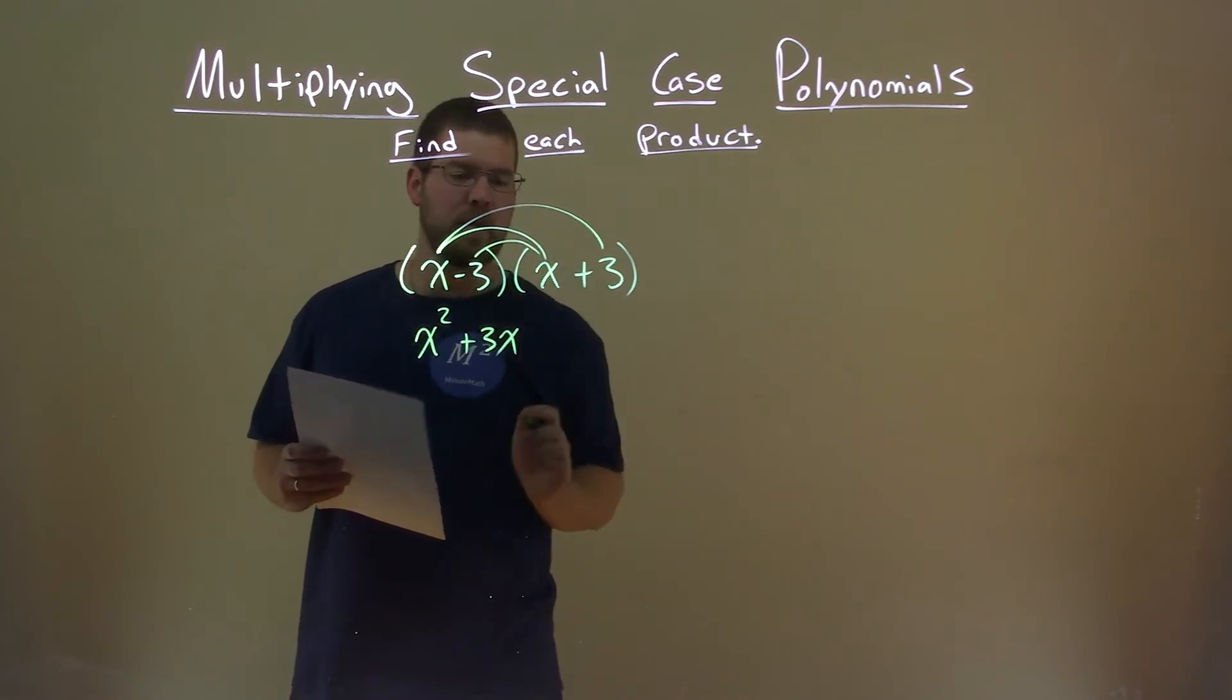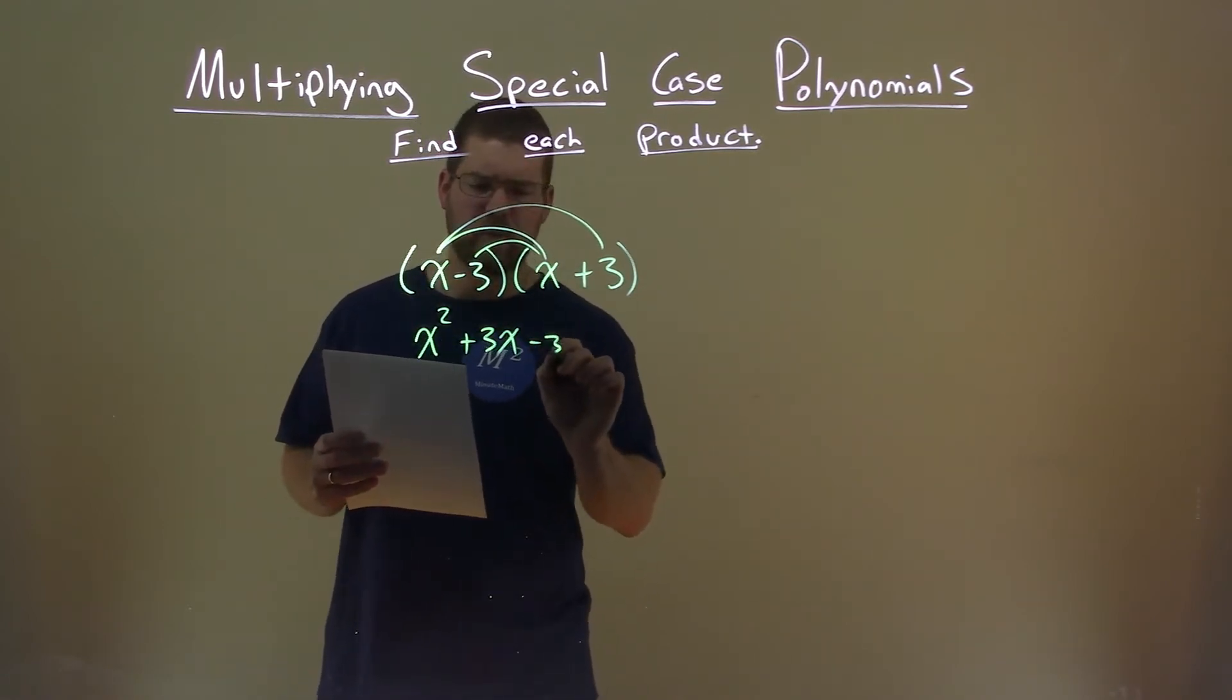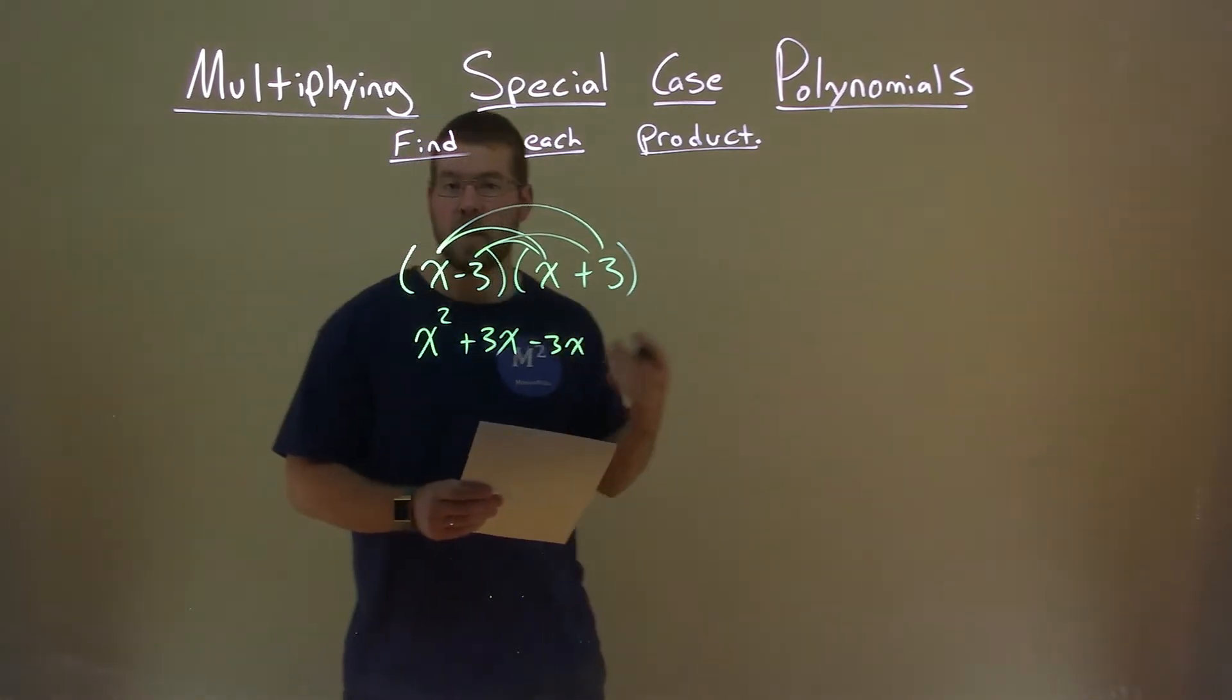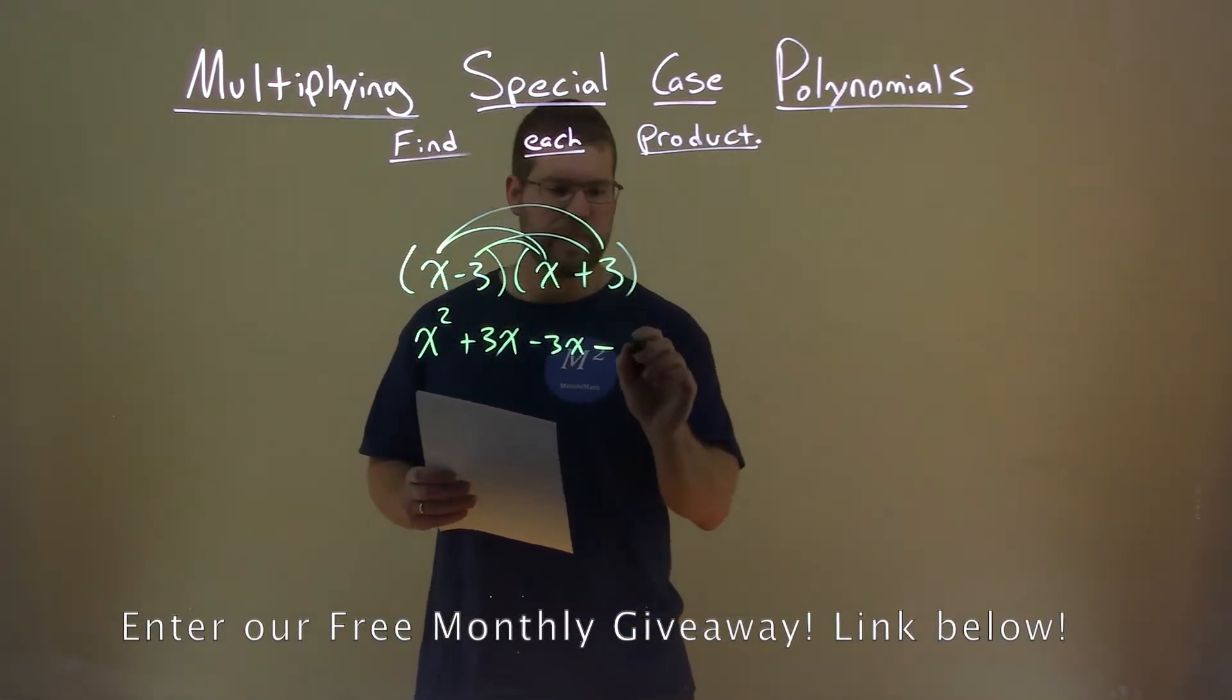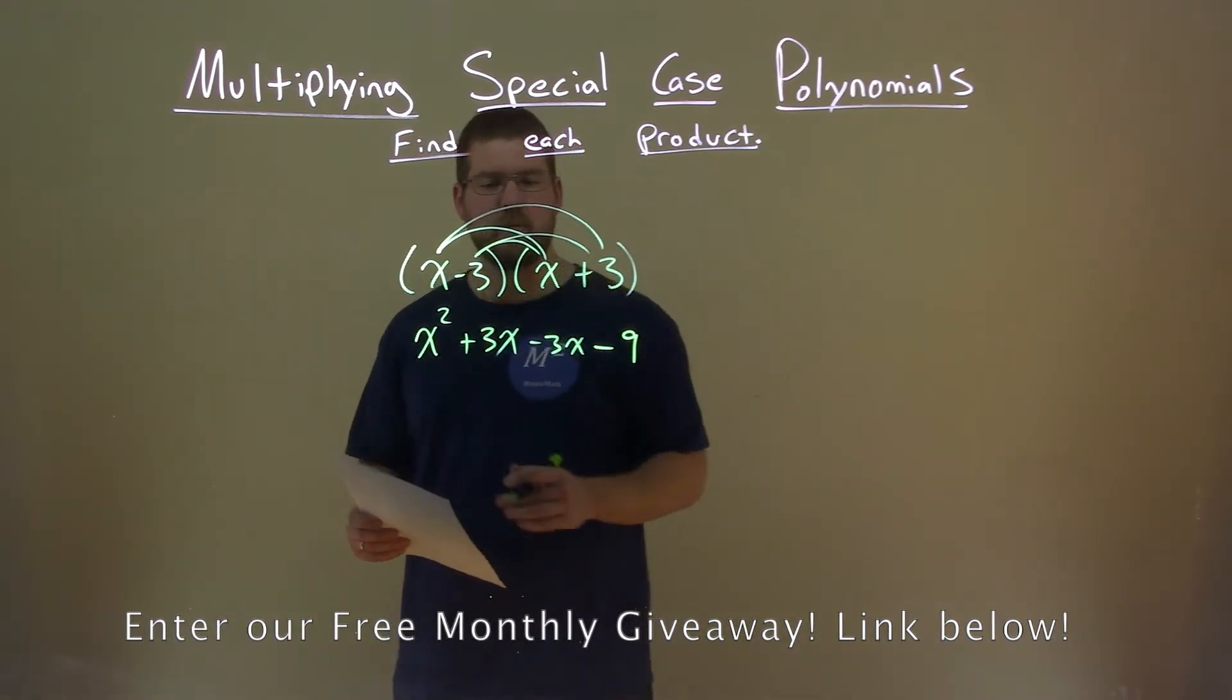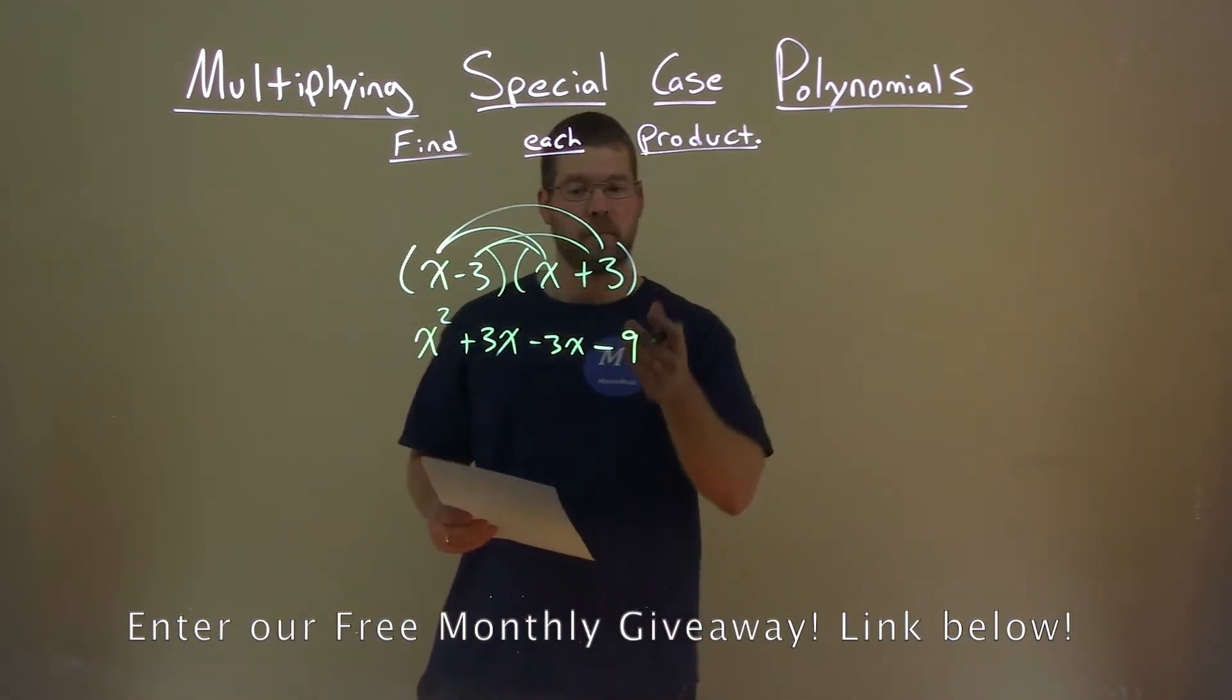Minus 3 times an x is a minus 3x, and minus 3 times a positive 3 is a minus, well, 3 times 3 is 9. So we have x squared plus 3x minus 3x minus 9.